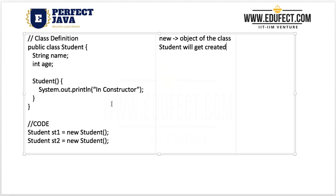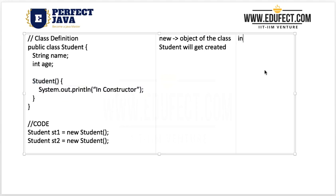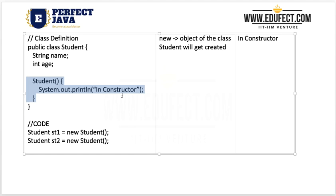When an object is created or being constructed, it will call the constructor. So 'Student' here is a constructor — it constructs an object of the class Student. When we call 'new Student()', this constructor gets called and hence this piece of code gets executed, printing 'in constructor' on the screen.